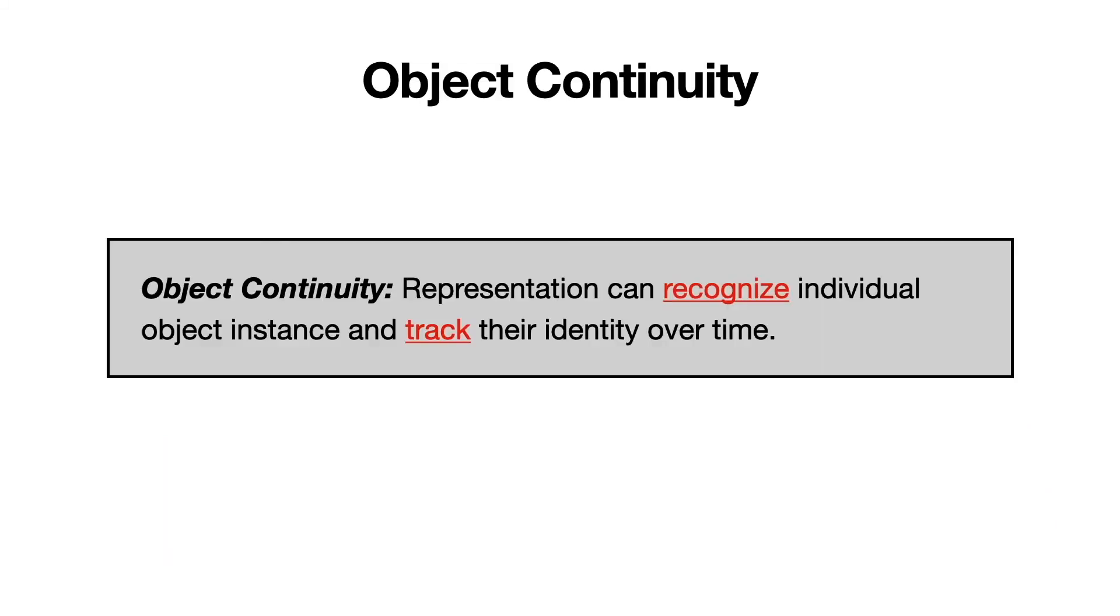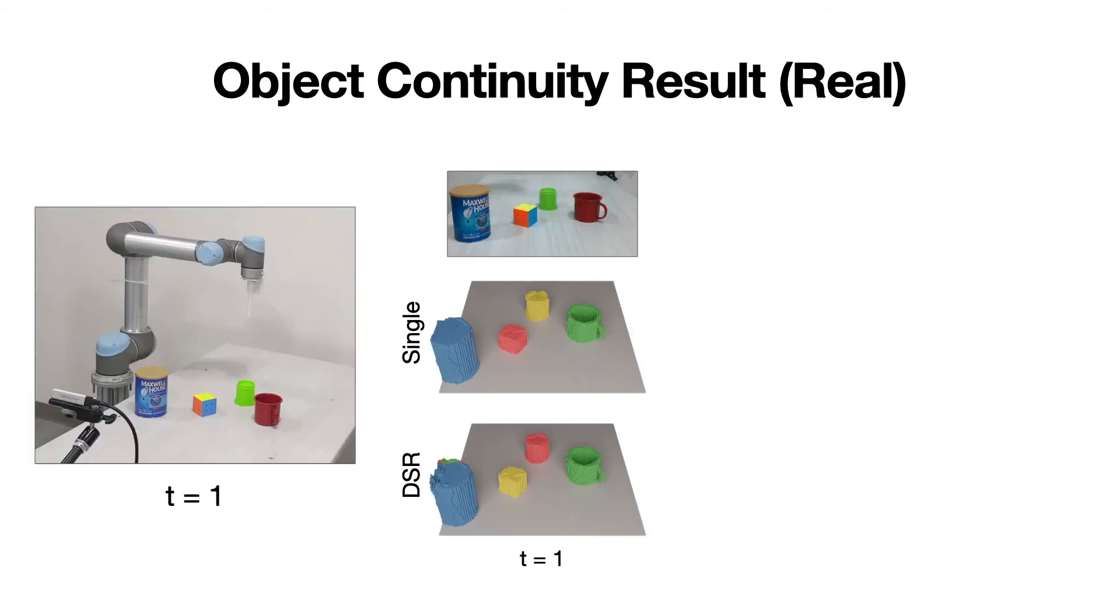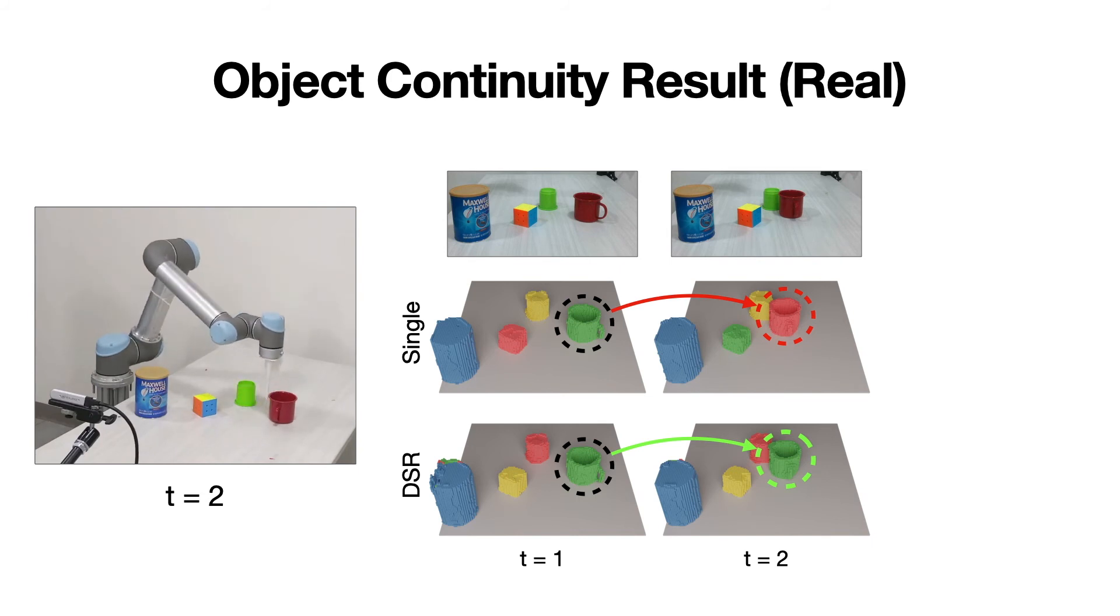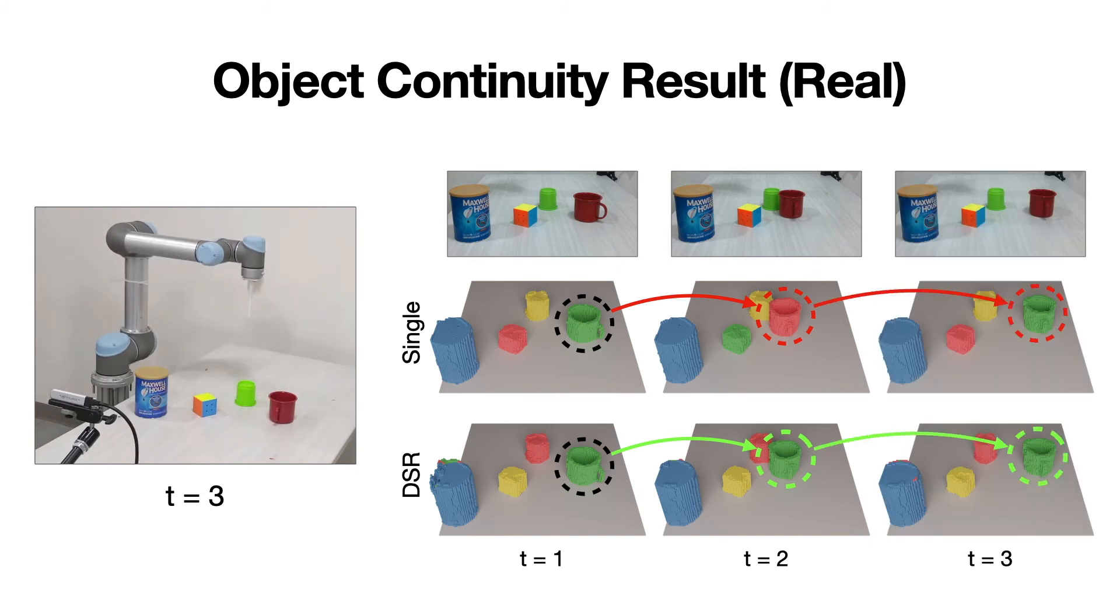Object continuity means the representation can recognize individual object instances and track their identity over time. Continuous instance prediction between two consecutive steps are highlighted in green, while discontinuity is highlighted in red. Unlike the single step model, which is sensitive to the spatial order, our model maintains spatial temporal continuity via consistent labeling of object instances.